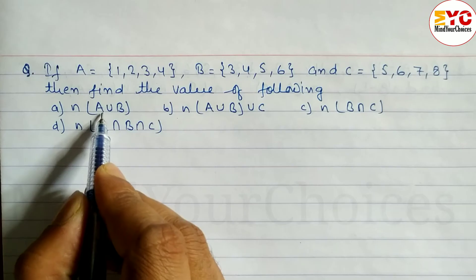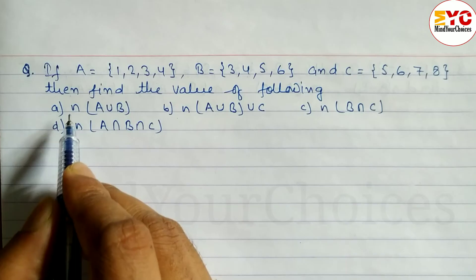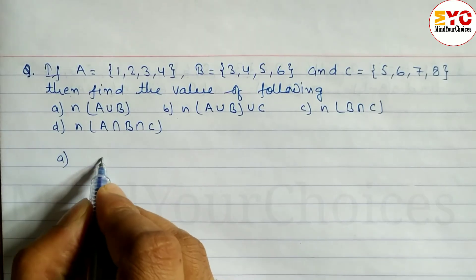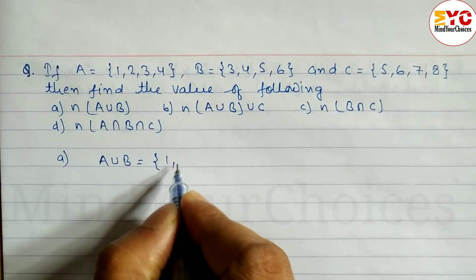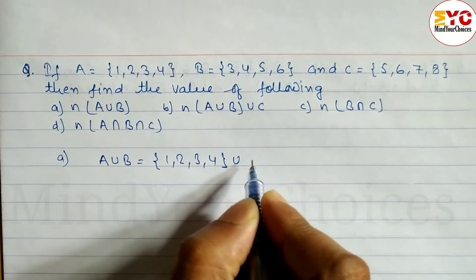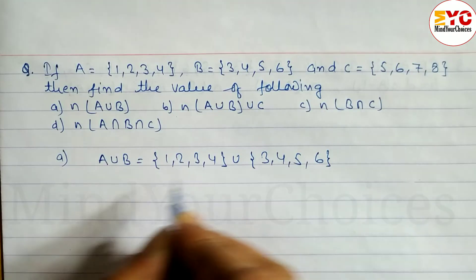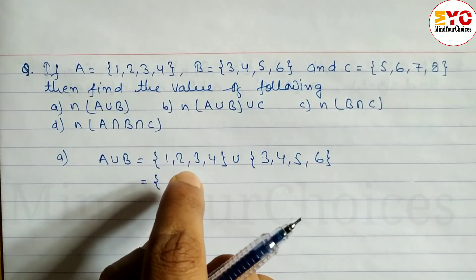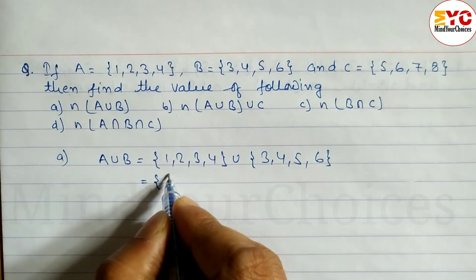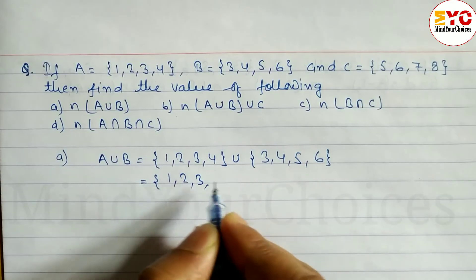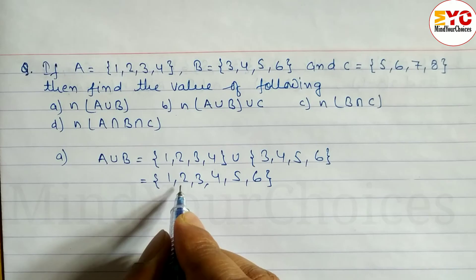So, A union B is first. We have to find out A union B. Set A is equal to {1, 2, 3, 4} union Set B, which is equal to {3, 4, 5, 6}. Union means all the elements which belong in set A as well as B, written in ascending order: 1, 2, 3, 4, 5, 6.